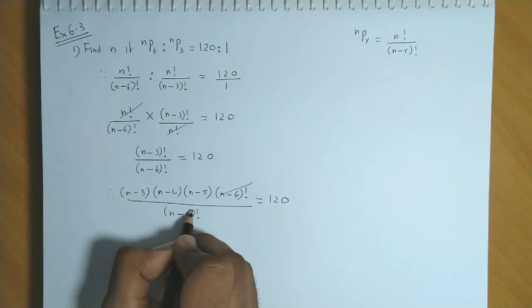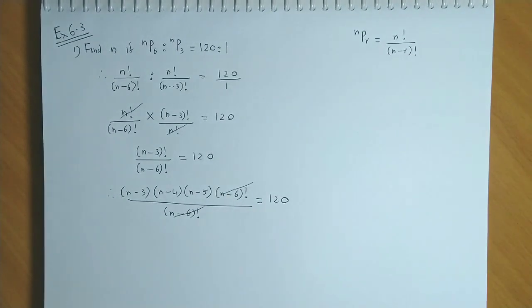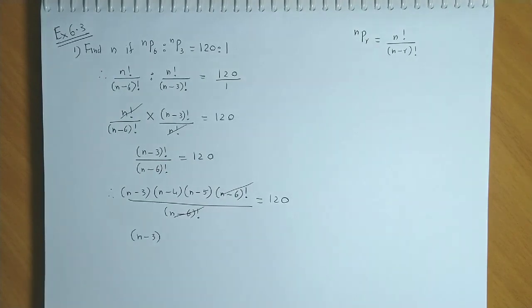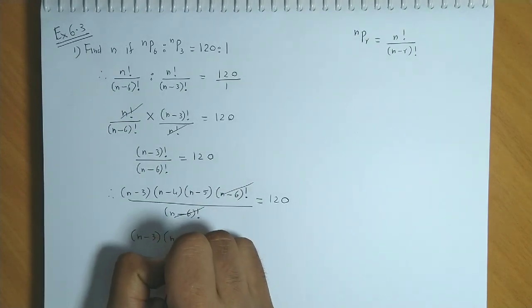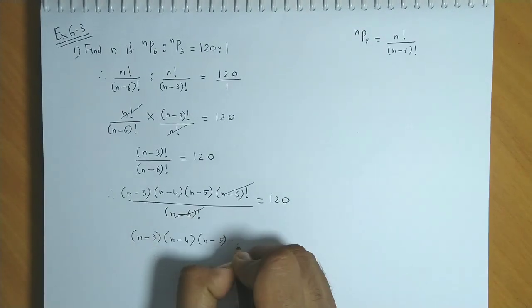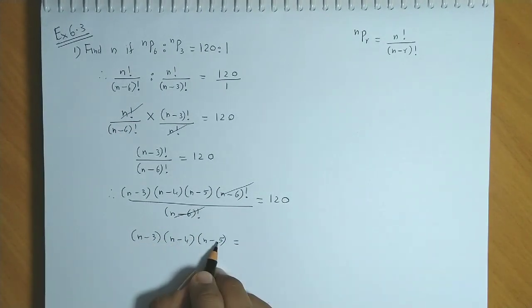n minus 6 factorial gets canceled, so we have n minus 3 into n minus 4 into n minus 5. Here there are 3 factors with a difference of 1.